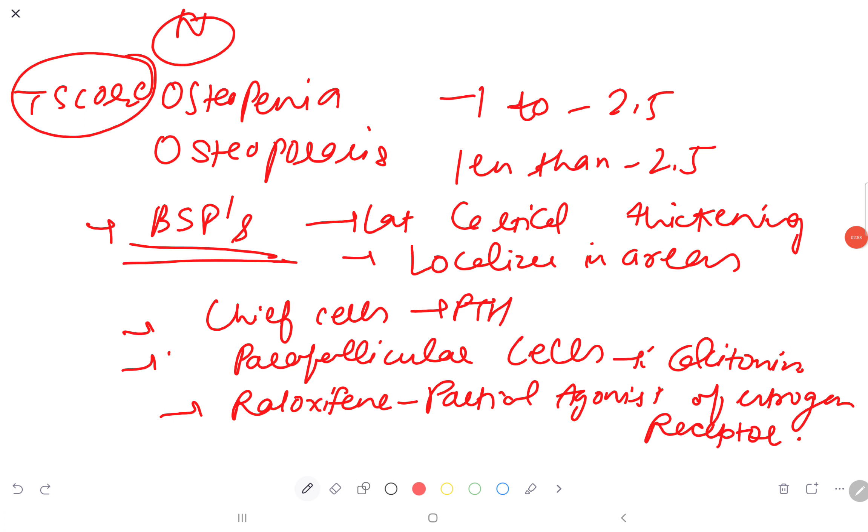We divide patients into osteoporosis, osteopenic, or normal based on T-score on DEXA scan. Osteopenia is defined as T-score between minus 1 to minus 2.5, and osteoporosis is less than minus 2.5.